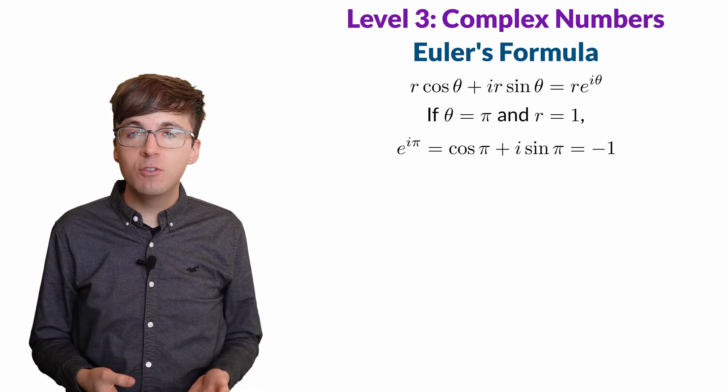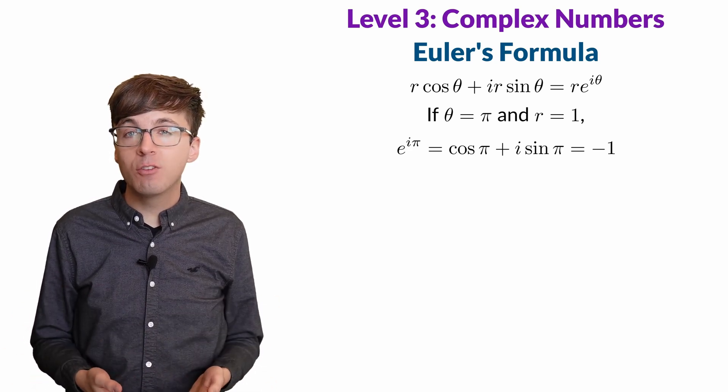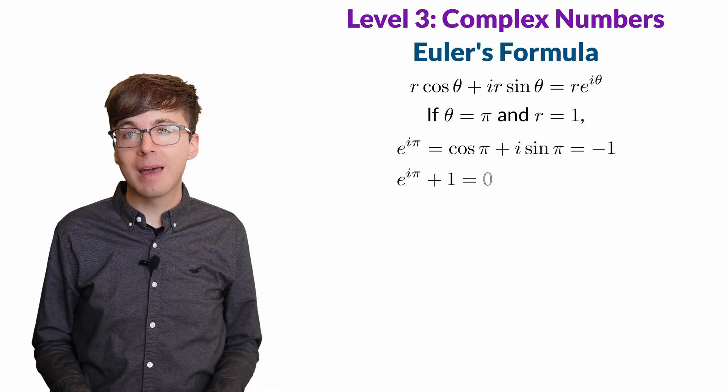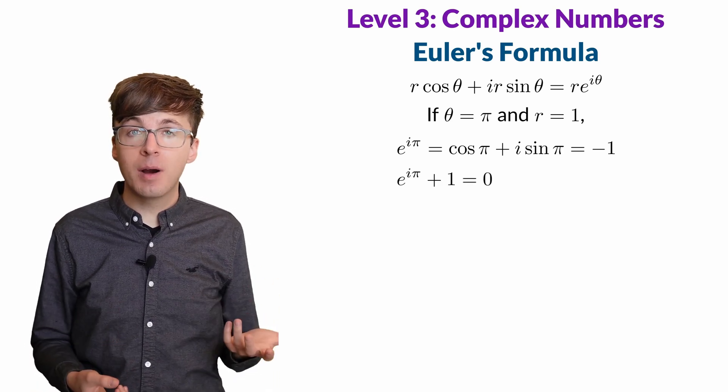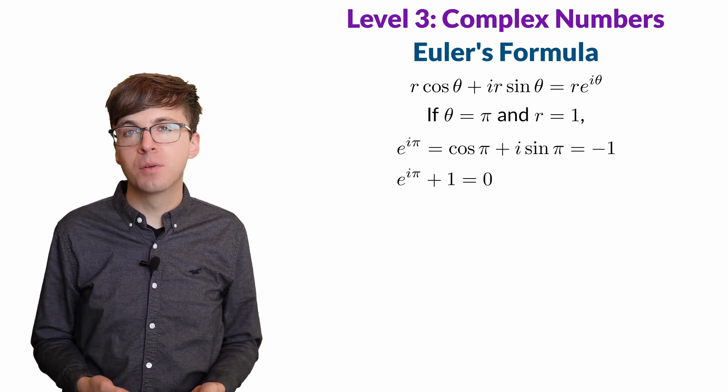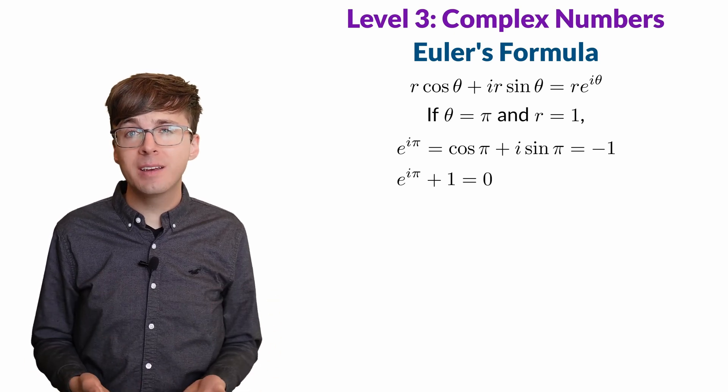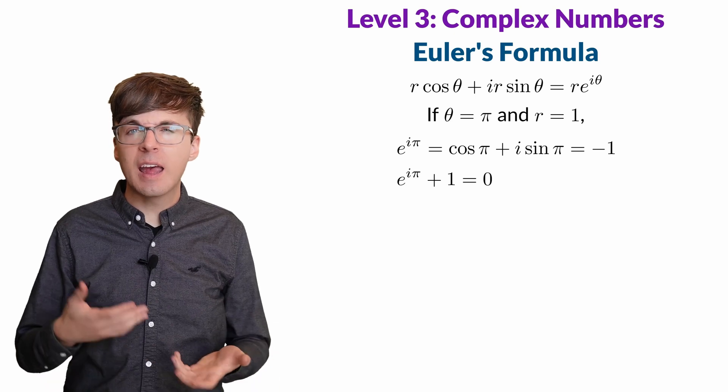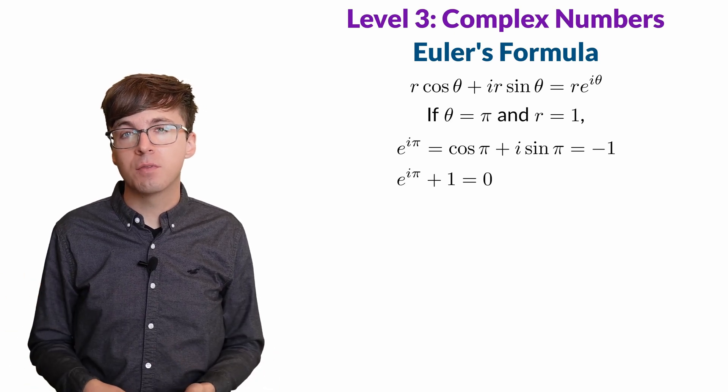We can add 1 to each side and now we have an equation that relates 5 of the most important numbers in math: e, i, π, 1, and 0. We see pi is deeply connected to the imaginary number i and the base of the natural exponential function.